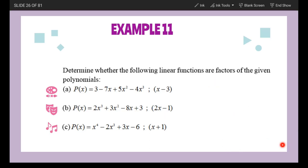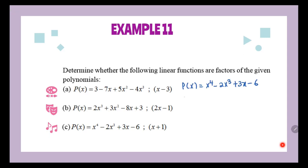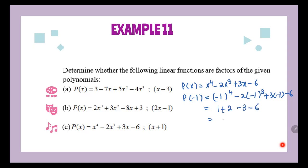Now the last example on factor theorem, 11c: p(x) = x⁴ − 2x³ + 3x − 6. We find out if x + 1 is a factor by substituting p(−1). We get (−1)⁴ minus 2(−1)³ plus 3(−1) minus 6, which gives 1 plus 2 minus 3 minus 6, giving us 3 minus 9 which is negative 6. This is not 0, so the conclusion is x + 1 is not a factor of p(x). We need to get 0 for it to be a factor.